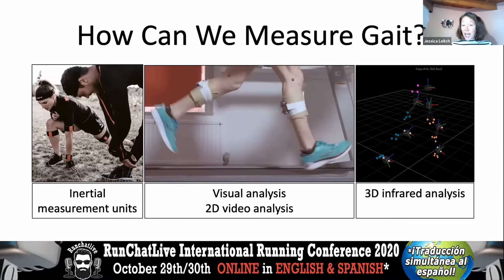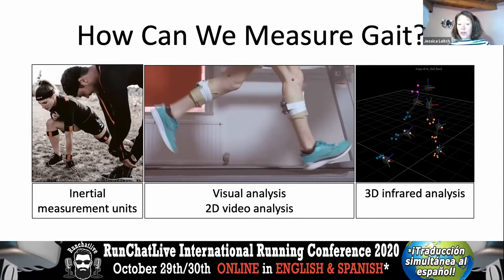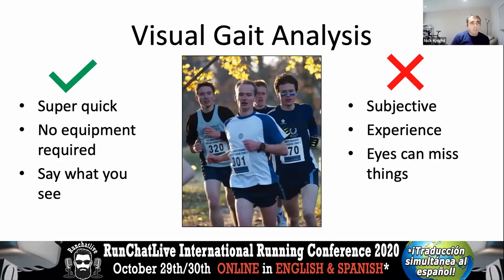Starting with visual analysis, then 2D video analysis, then inertial measurement units or IMUs, and at the top tier 3D infrared analysis. We'll talk through pros and cons of each and where they fit into clinical practice. Starting with visual gait analysis, the beauty of it is its simplicity — it's super quick, you only need your eyes, no equipment whatsoever. The issues are that it can be subjective.